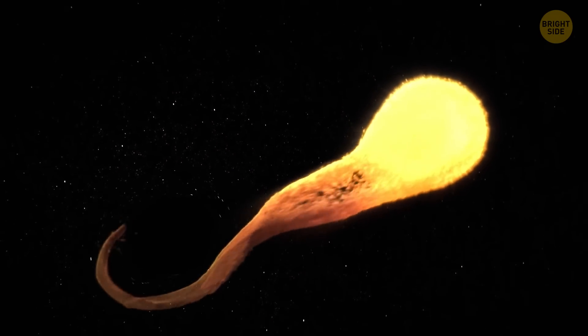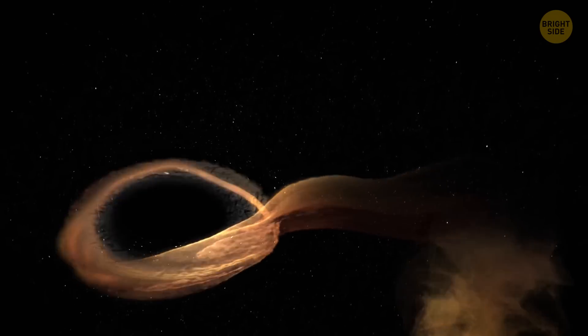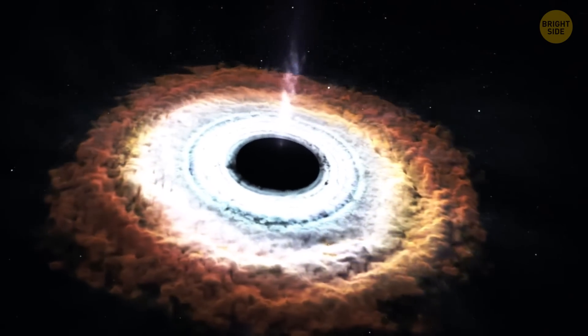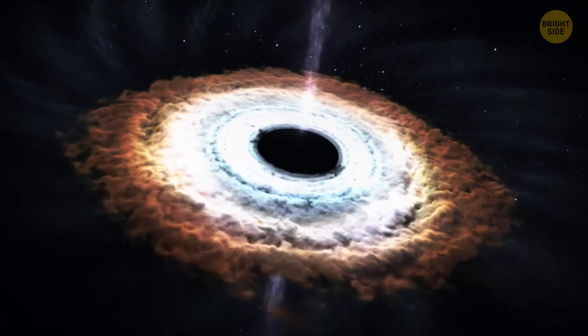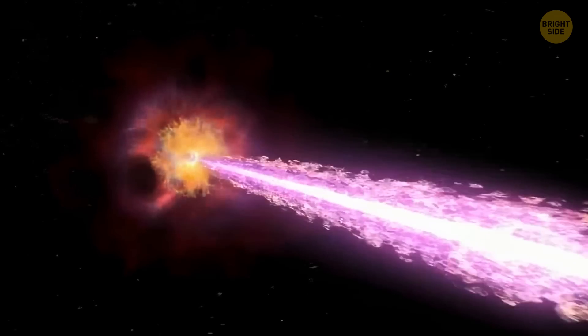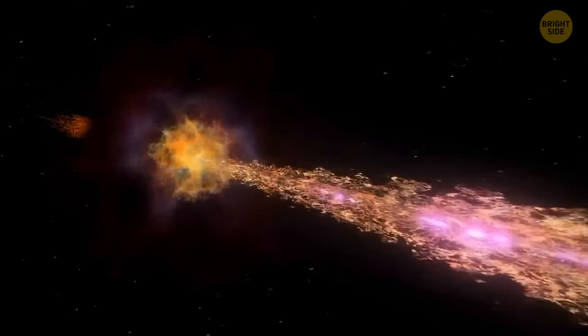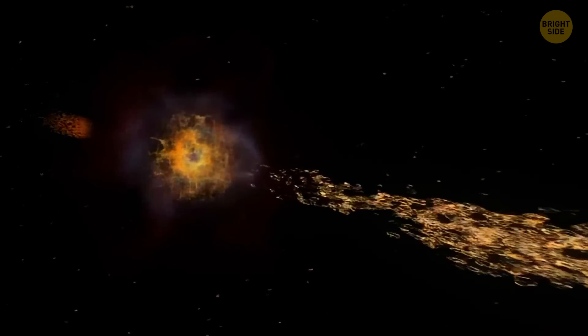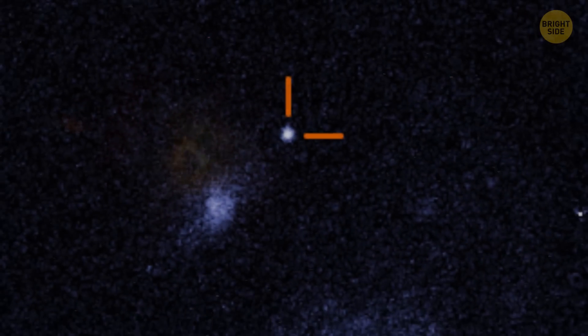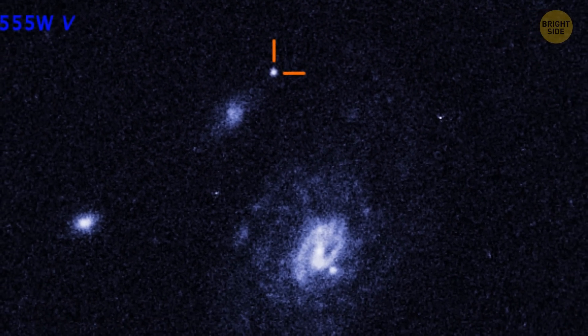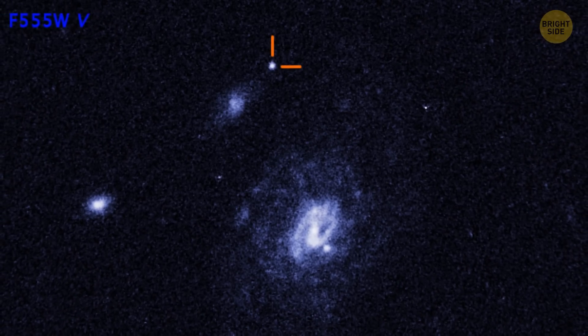Another possibility is that the explosion was a star being torn apart by a black hole with a mass between 100 and 1,000 times that of the Sun. Although we still have lots of questions, one thing is for sure. The Finch is a luminous, fast blue optical transient. Except for the weird location where it happened, it has all the other characteristics to be classified as one.